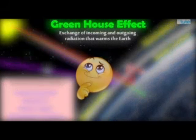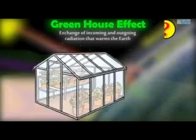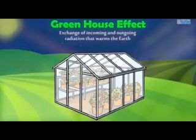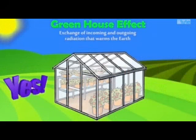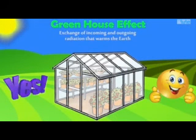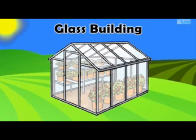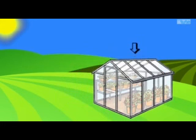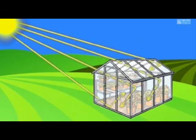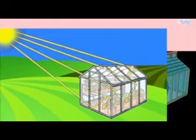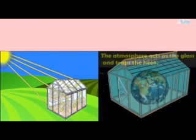But why is it called the greenhouse effect? Is it something to do with a greenhouse? Yes — a greenhouse is a glass building in which plants that require protection from cold weather are kept. The glass cover helps to trap all the heat energy and keeps the inside environment warm. Similarly, our planet Earth's atmosphere acts as the glass and traps the heat.